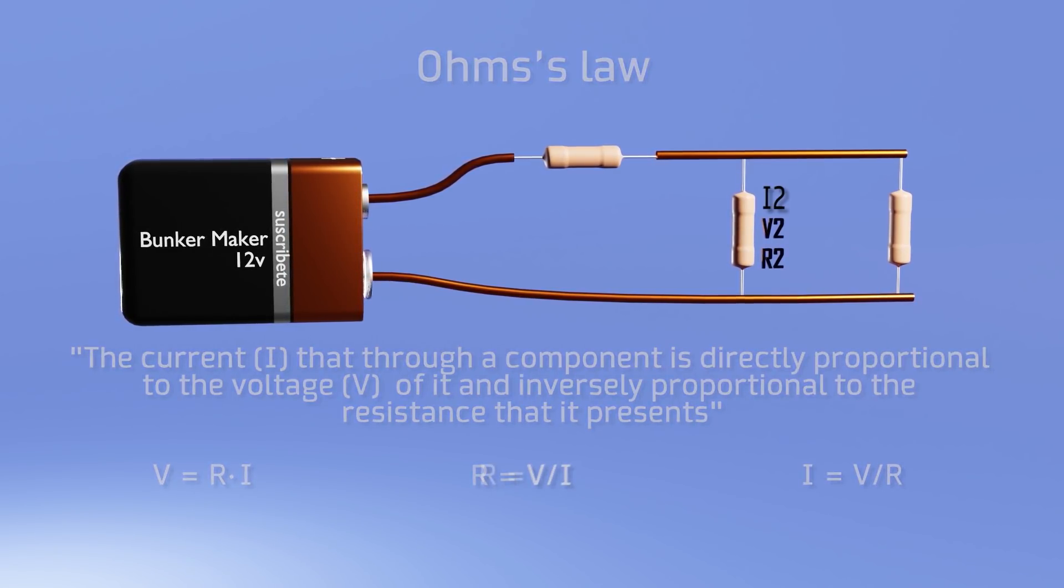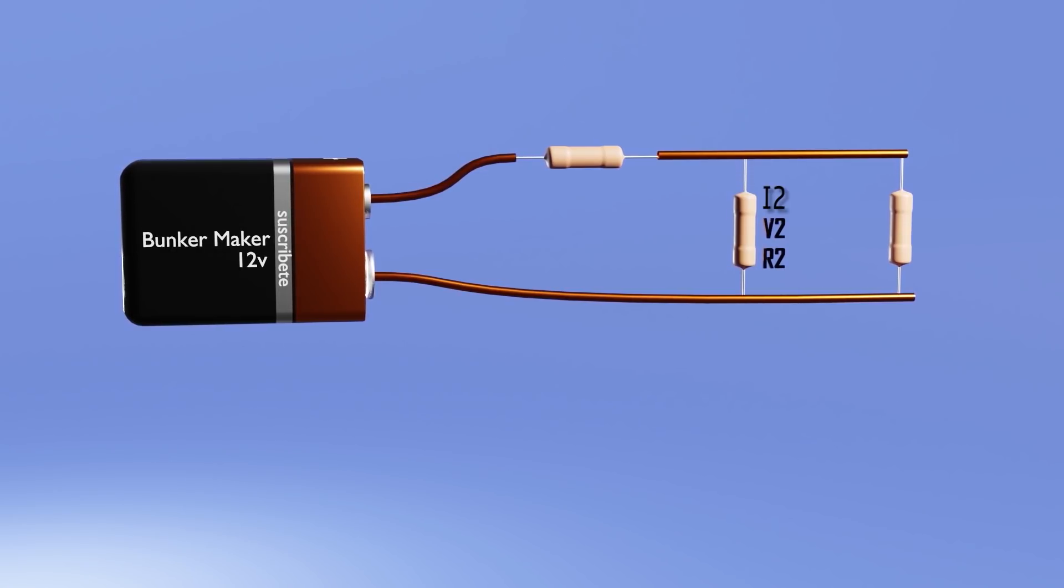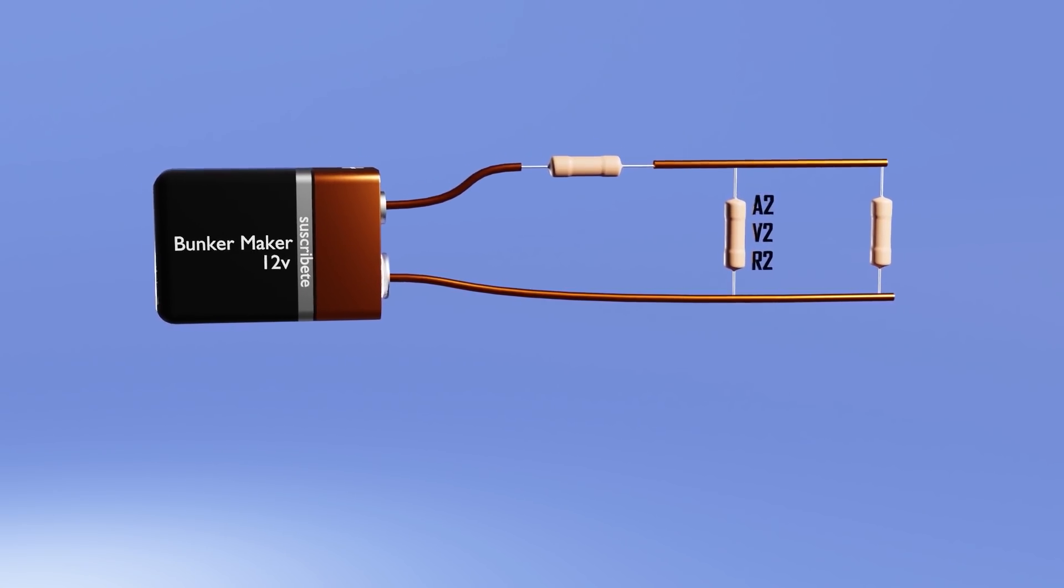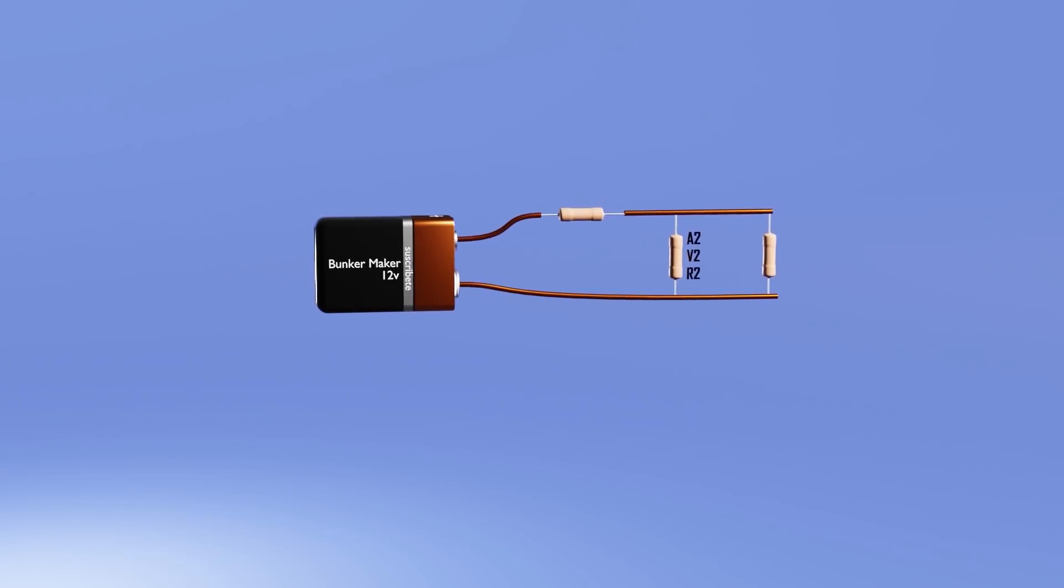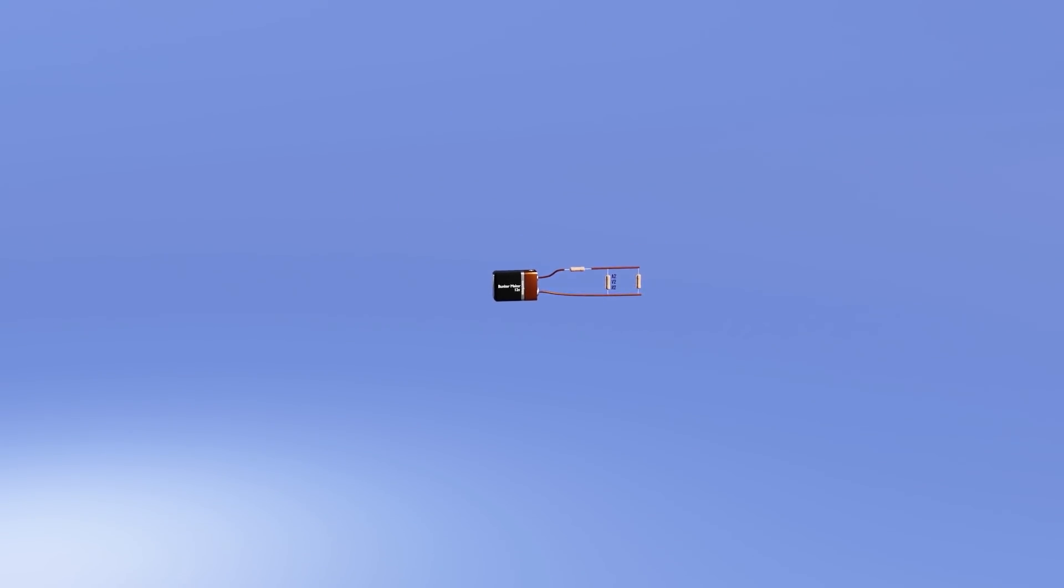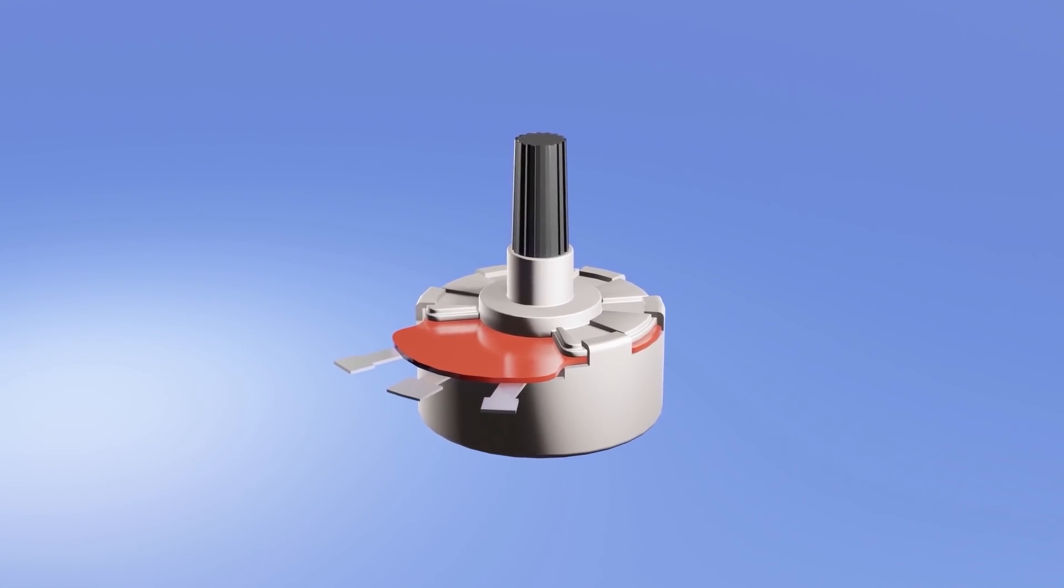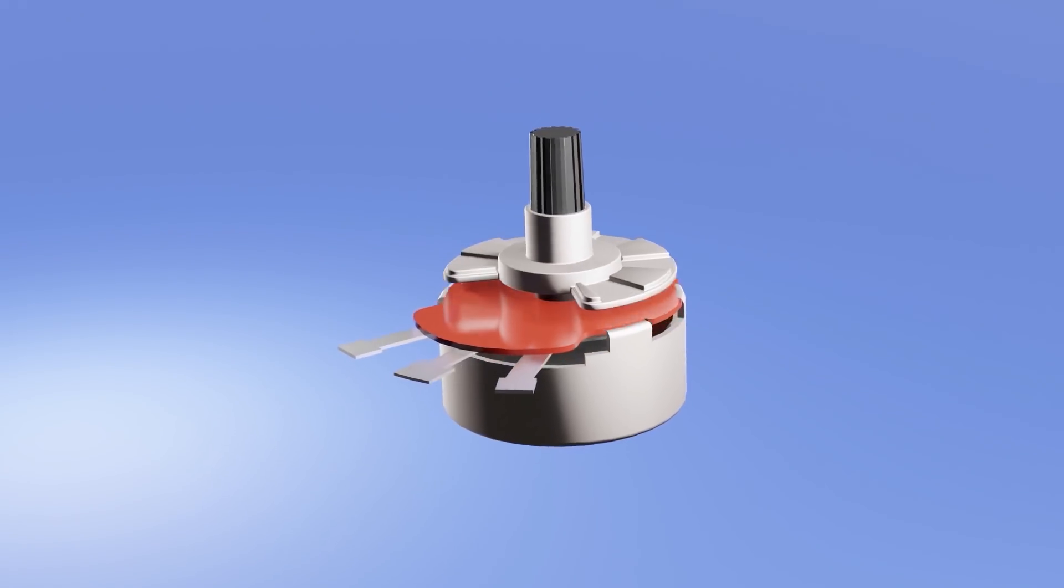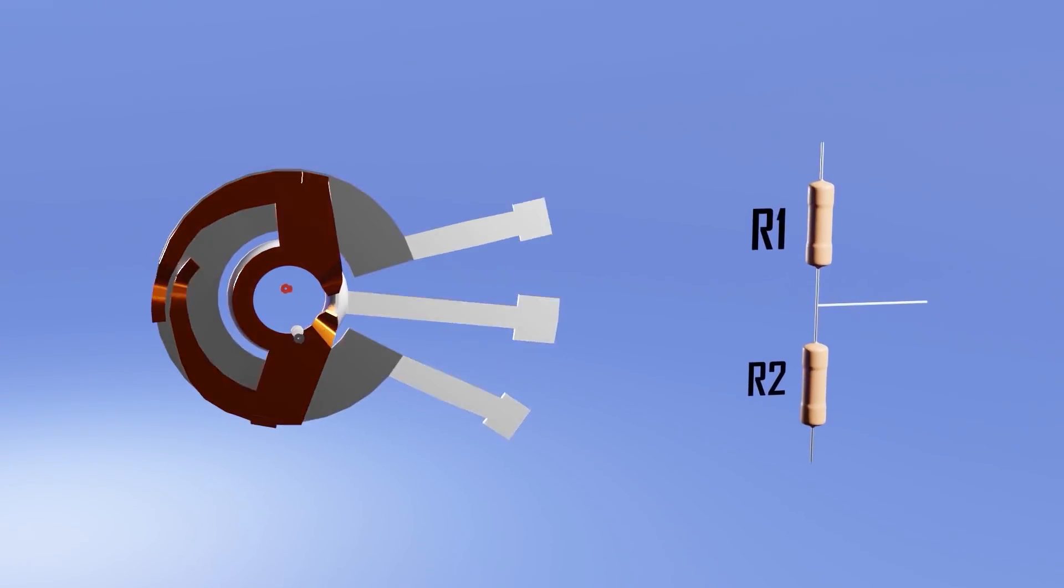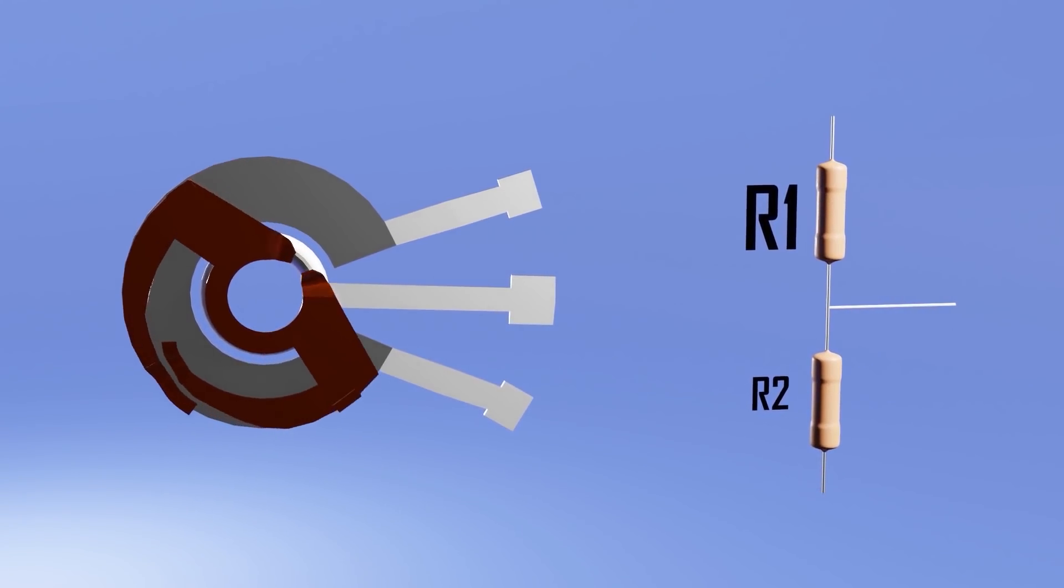As I said, a resistance allows us to control the voltage that passes through other components, and there will be times when we want to modify that voltage during the use of the circuit, not only during the design stage. And here is where the potentiometer appears. The way a potentiometer works is using an arc-shaped resistor. Which, by adding a point of contact with another terminal right between its ends, act as if it had two resistors in series.